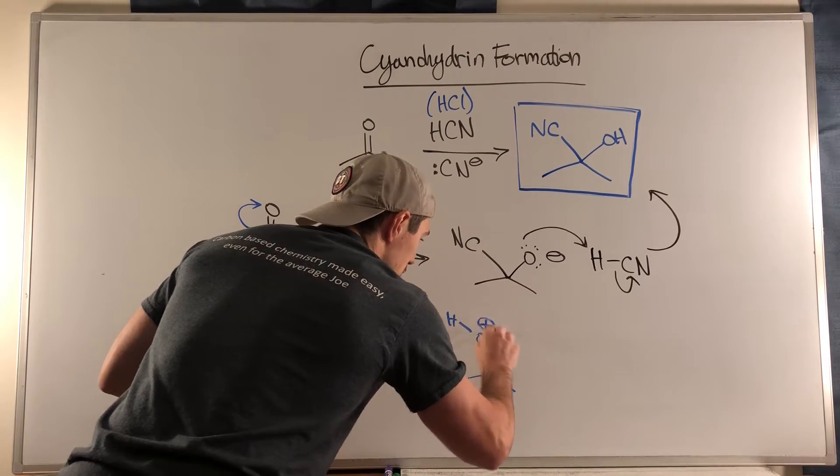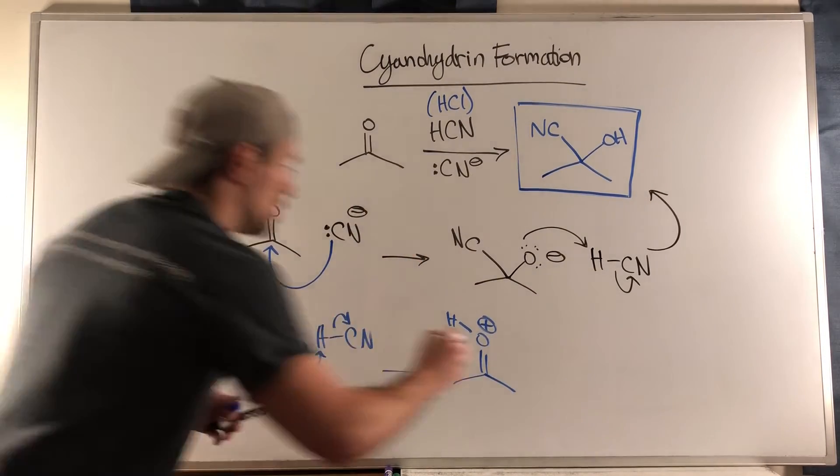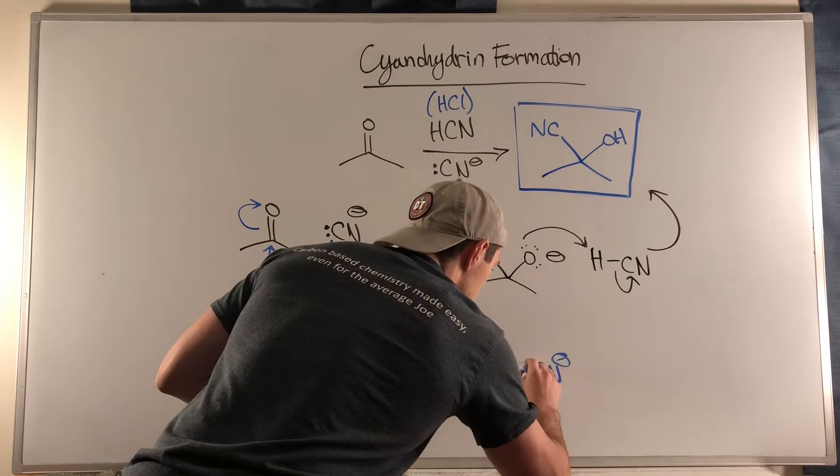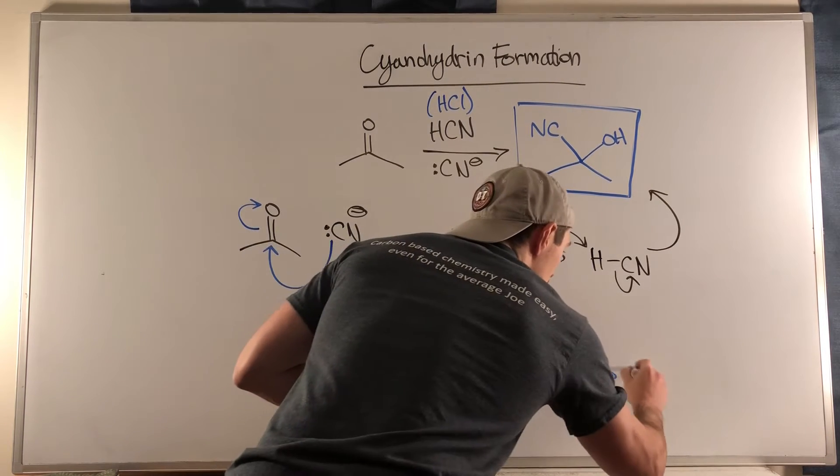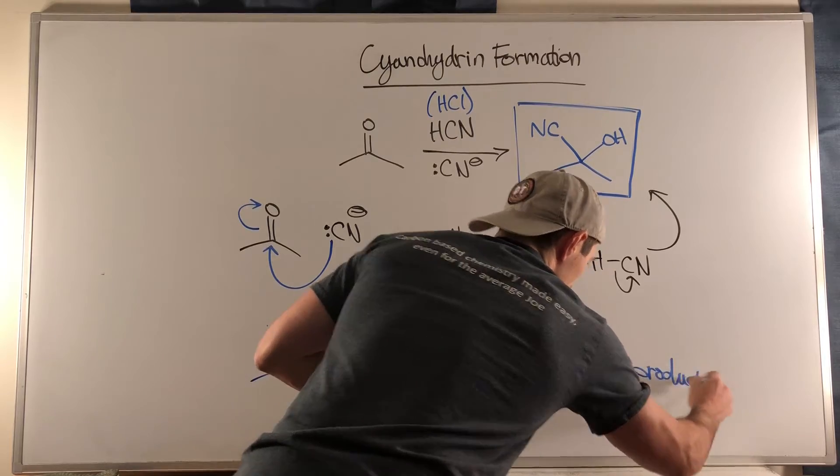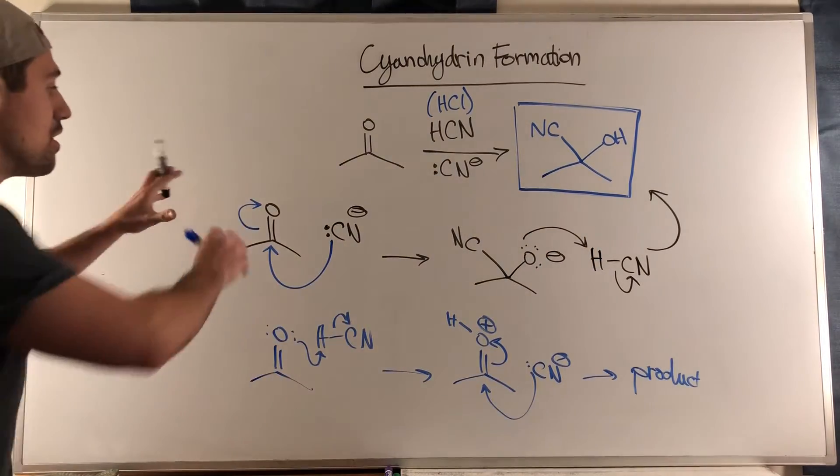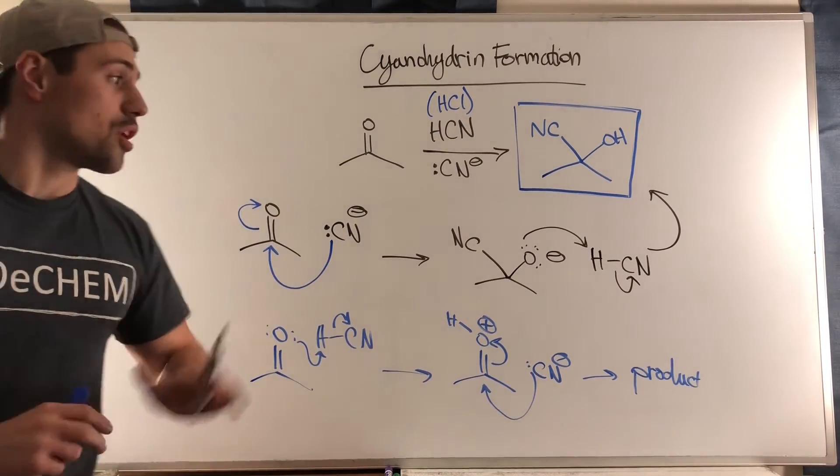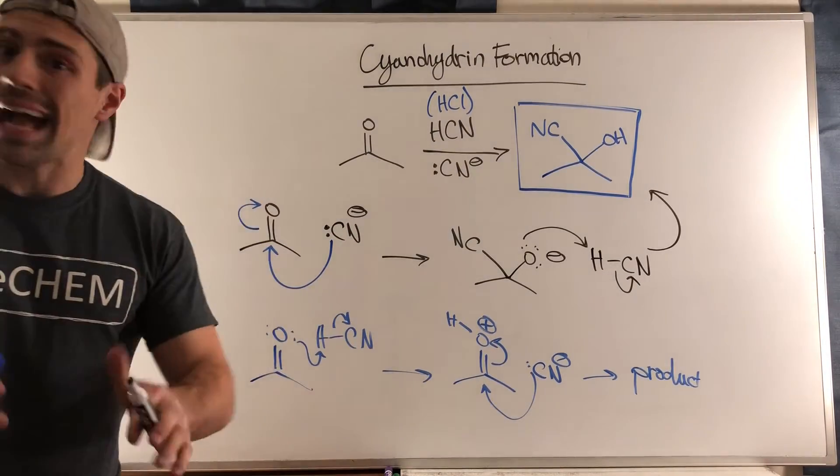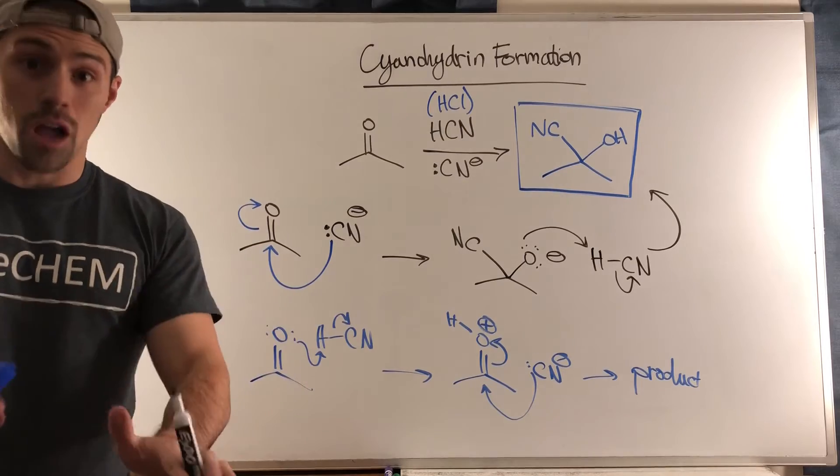You then have the oxygen have a positive charge, you then take the resulting cyanide and attack, kick electrons up, and form the product that we see above. However, I've seen this pathway that's written in black marker much more frequently.